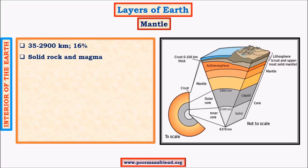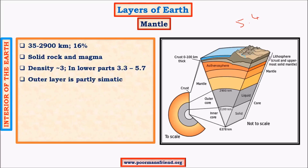The mantle makes up about 16% of the earth's total volume. It extends from about 100 to 2,900 km below the earth's surface and is in a semi-molten state — a combination of solid rock and magma. Its density at the outer layers is about 3.3, and near the outer core it is about 5.7. The outer layer of the mantle is partly simatic, made up of silicates of magnesium, and the inner layer is also simatic with ultra-basic rocks having lesser silicate content.